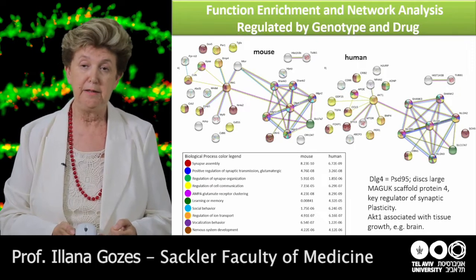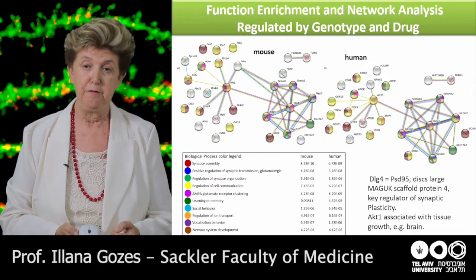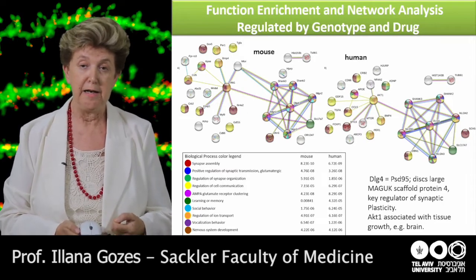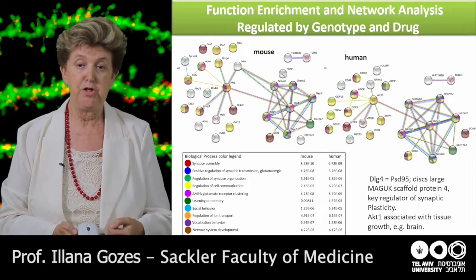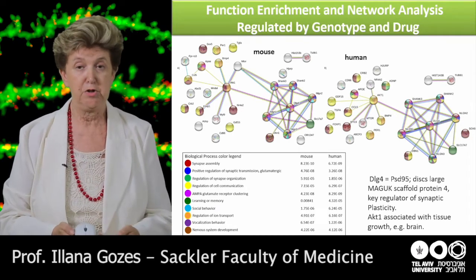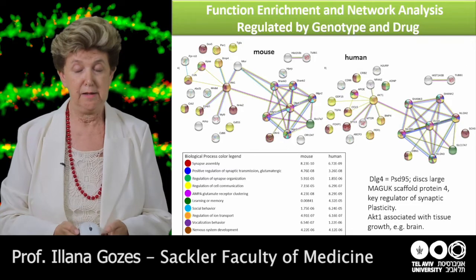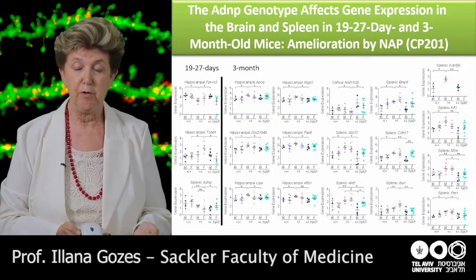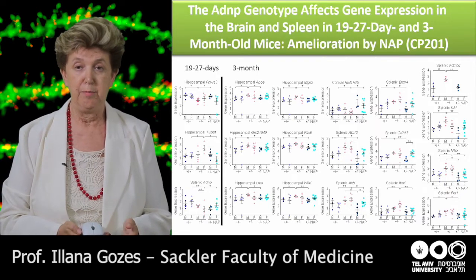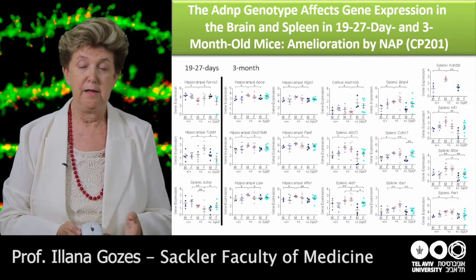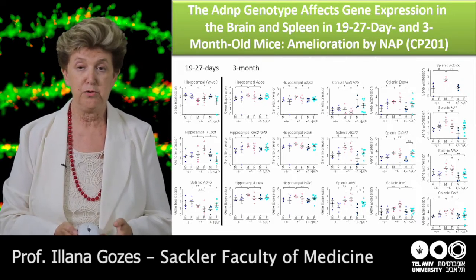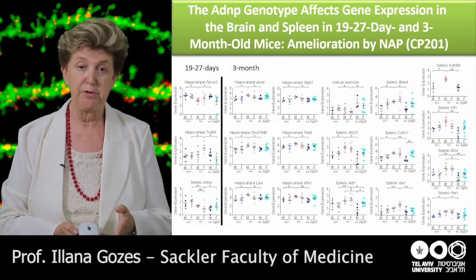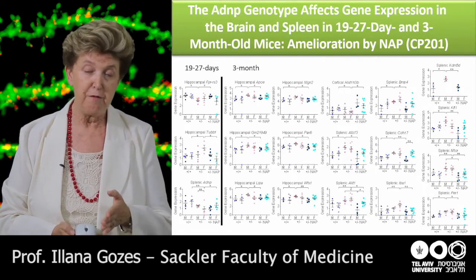One gene that ADNP and NAPVSIPQ regulate is PSD-95 — not only at the protein level but also at the gene level; it's also called DLG4. Another is Actb, which is associated with tissue growth and especially the brain. Looking at specific genes, both the ADNP genotype and NAPVSIPQ treatment regulates and corrects genes in the hippocampus, cortex, and also in the spleen, meaning the spleen is also a player and NAPVSIPQ may protect against inflammatory processes.